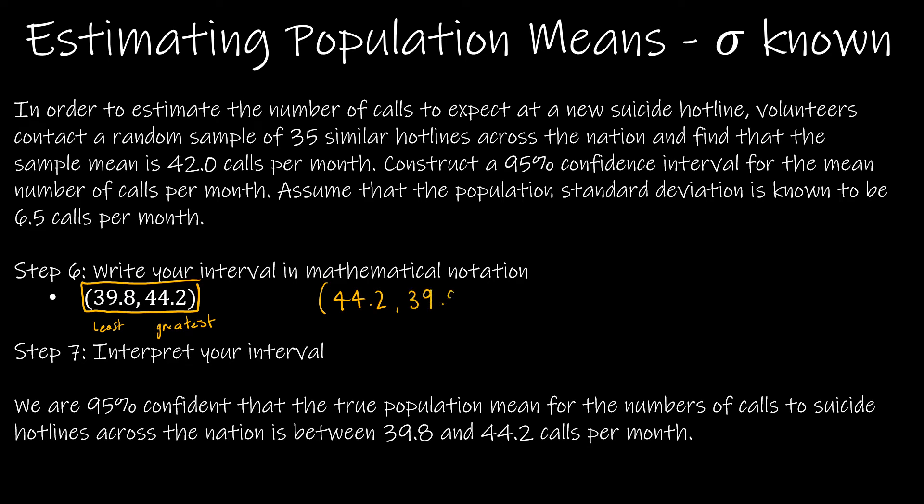And then we want to interpret what it means. We are 95% confident that the true population mean for the number of calls to suicide hotlines across the nation is between 39.8 and 44.2 calls per month. Again, we're talking about our confidence in capturing the true population mean. So we're saying the true population mean is likely between 39.8 and 44.2 calls per month.